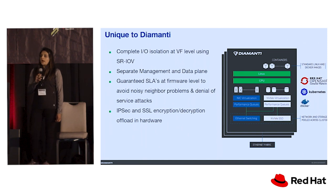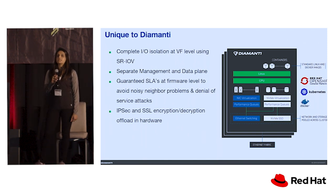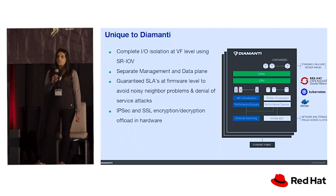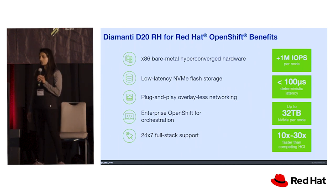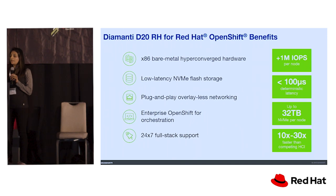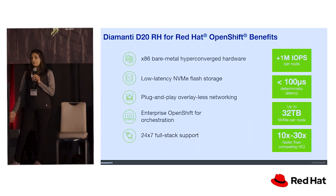DMRT also provides full enterprise-level storage features like data replication, asynchronous and synchronous, along with crash-consistent snapshots, backup to NFS server, and solutions like data disaster recovery for persistent storage. The applications running on Red Hat OpenShift on DMRT's HCI platform can also benefit from its plug-and-play overlay network.